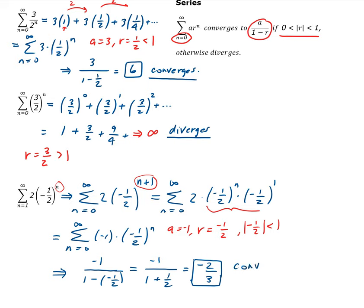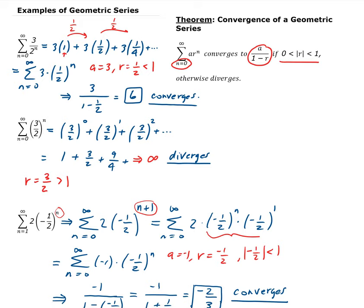So this series converges. That was an example where we had to shift the index to 0 in order to apply the theorem. Once we shift it, we can determine a and r, and then apply them to the theorem.